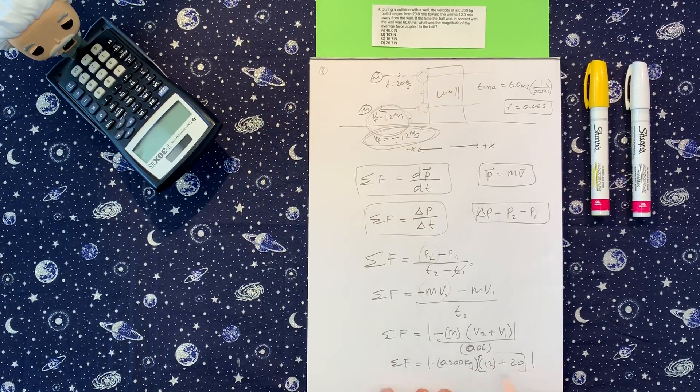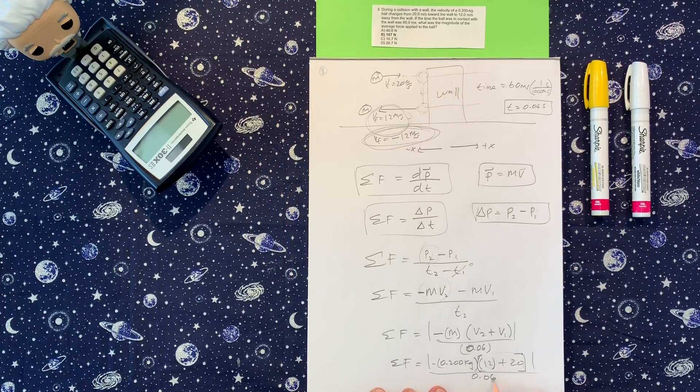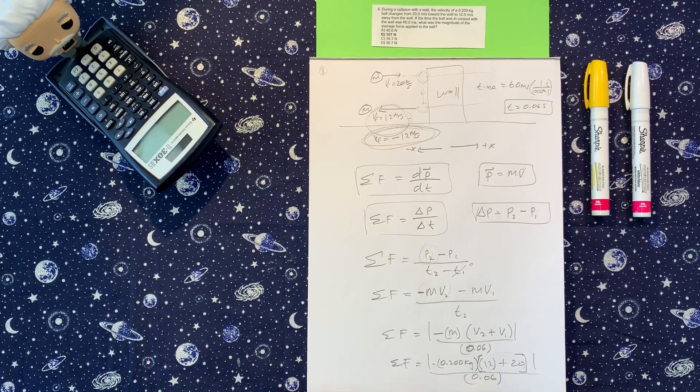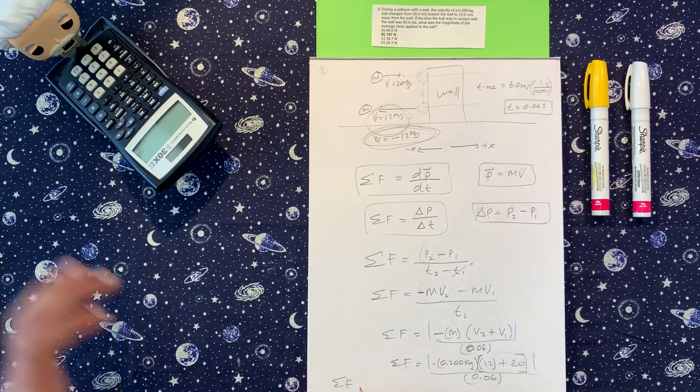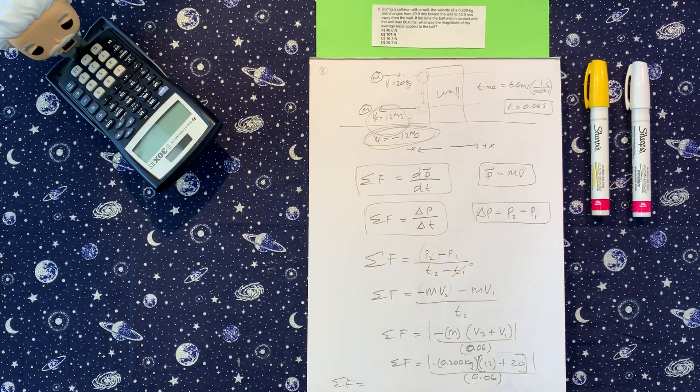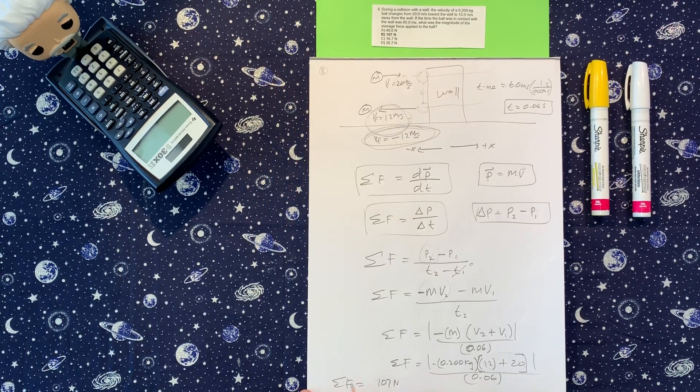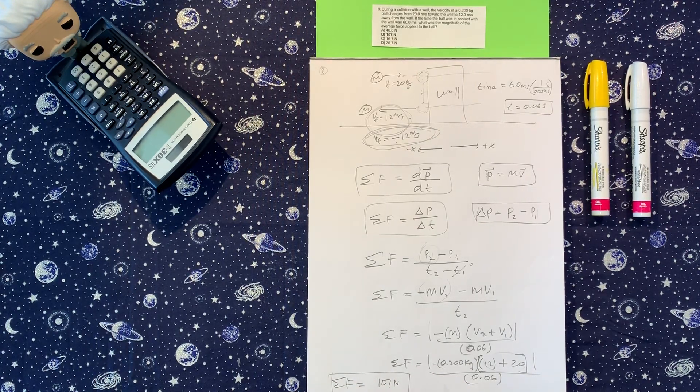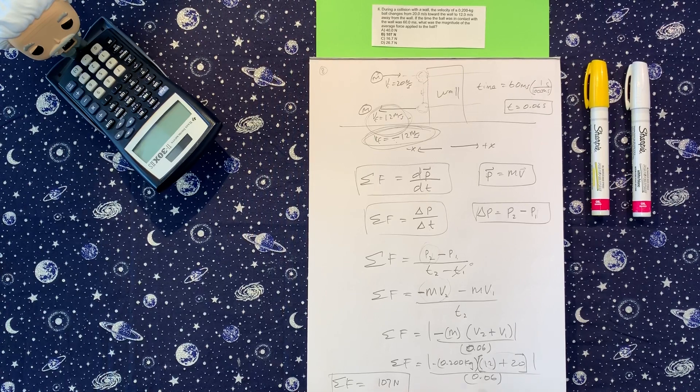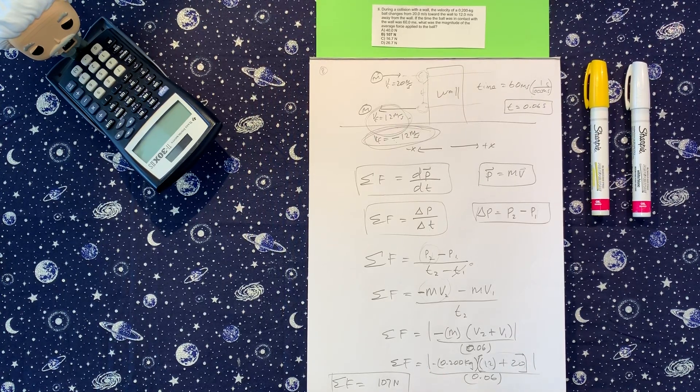And plus, the initial is 20. Let's put this in here, do this first, and this should give you 107 newtons. Should give you negative, but absolute value, we're just going to keep the positive version. That's going to be answer B.